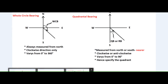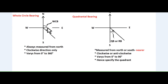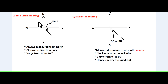Now let us see what is whole circle bearing and reduced bearing. In whole circle bearing system, an angle is measured to a line in clockwise direction only from the magnetic north. So if the line is laid in any of the 4 quadrants, the angle should be measured from the magnetic north only in clockwise direction towards the line. The angle in whole circle bearing may vary from 0 to 360 degrees.